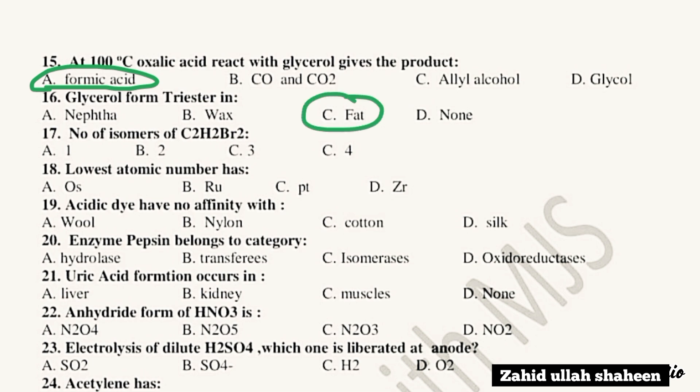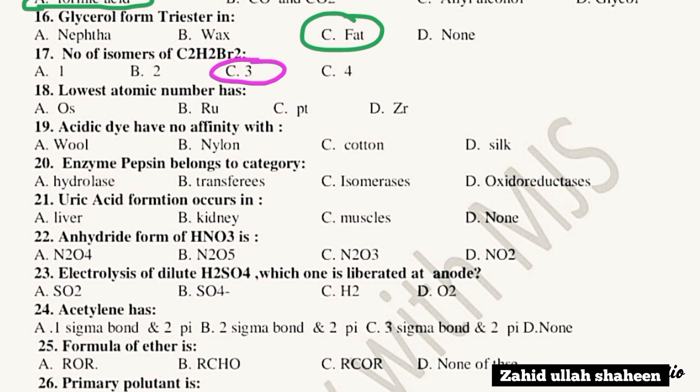Question 17: For C2H2Br2, the number of structural isomers is 3. Question 18: The element with the lowest atomic number among the options is Zr (zirconium).